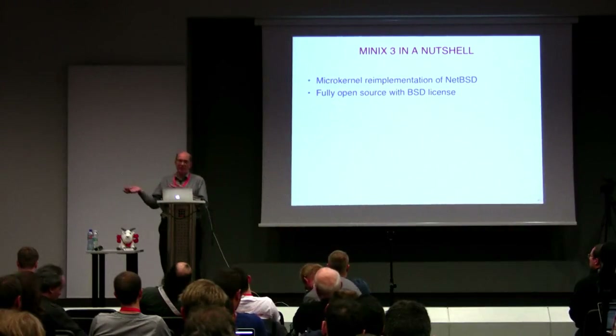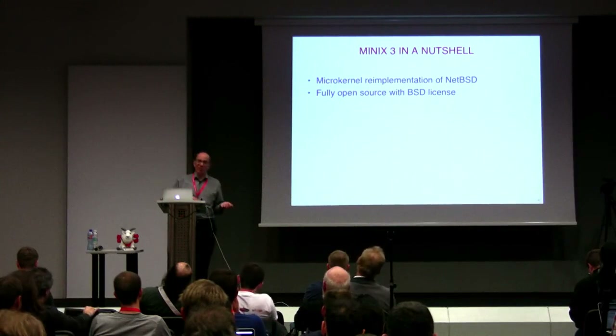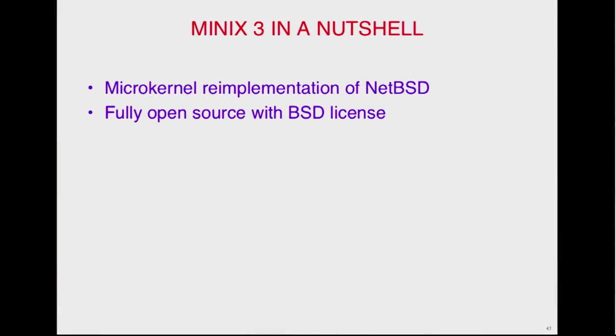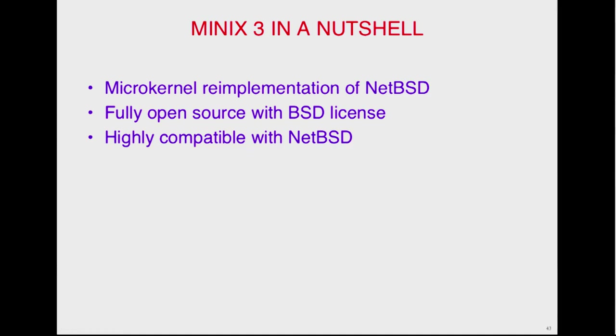Here's Minix in a nutshell. It's open source with a BSD license. It's quite compatible at user level — 81% compatible with NetBSD. Supports LLVM and GCC; the preferred compiler is LLVM Clang but we have GCC also. It uses pkgsrc. We build 4,200 packages, and it'll soon be about 7,000 when X11 is running again. One of my students used to work at IBM. They weren't keen about putting $100 million into Linux and giving everything to competitors under the GPL. The BSD license says if you want to tell us what you did, fine; if you don't want to, that's also fine. That's a strong point of the BSD license.